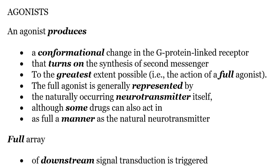Now let's discuss what happens when an agonist is present at the receptor. An agonist produces a conformational change in the receptor that turns on the synthesis of a second messenger to the greatest extent possible. The full agonist is generally represented by the neurotransmitter itself, but some drugs can also act in the same manner. Thus, an agonist triggers the full array of downstream signal transduction.